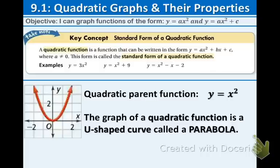So let's first discuss what a quadratic function is. It is a function that can be written in the form y equals ax squared plus bx plus c, and a cannot be equal to zero. This is called standard form of a quadratic function. Standard form means that it's in the form ax squared plus bx plus c, and you'll notice that the a, b, c are going in order just like the alphabet. Here are some examples: y equals 3x squared, y equals x squared plus 9, and y equals x squared minus x minus 2.